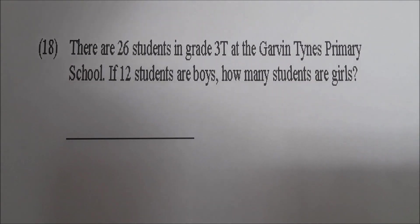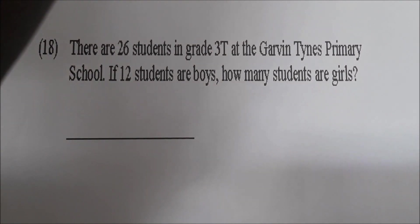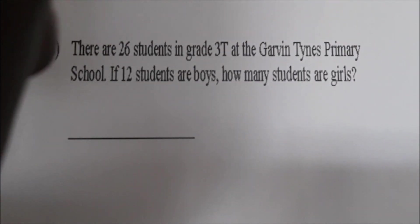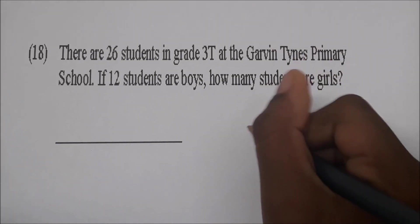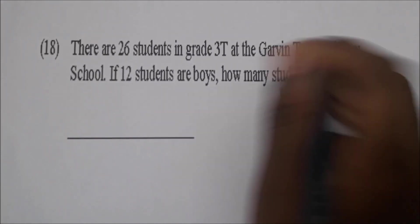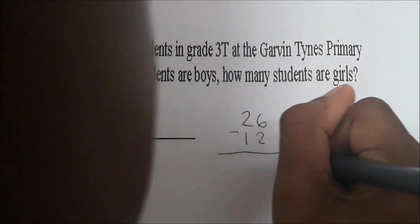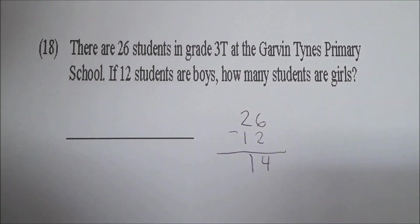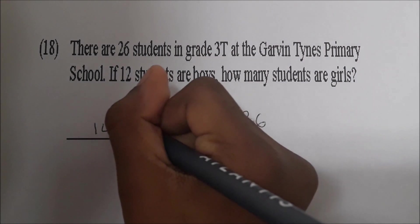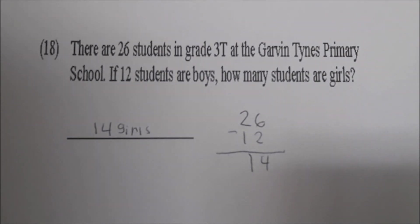Okay, number eighteen. Sky, read it for us. There are twenty-six students in grade three T at the Garvantines Primary School. If twelve students are boys, how many students are girls? Very good. So let me read it again. There are twenty-six students in grade three T at the Garvantines Primary School. If twelve students are boys, how many students are girls? Okay, let's work it first. Sky, do the working right at the back. Twenty-six. And you're taking away. Okay. Go ahead. Tell us what you're doing. Six take away two is four. And two take away one is one. Okay. Put the answer on the line for us. Very good, Sky. There are fourteen girls. Twenty-six take away twelve is fourteen.